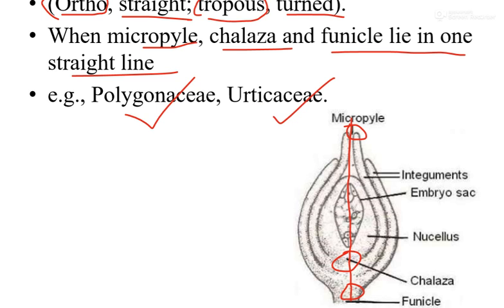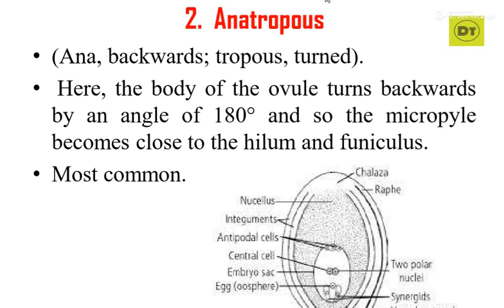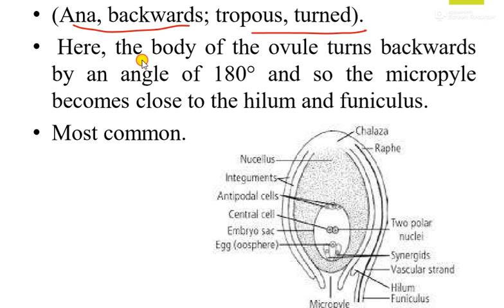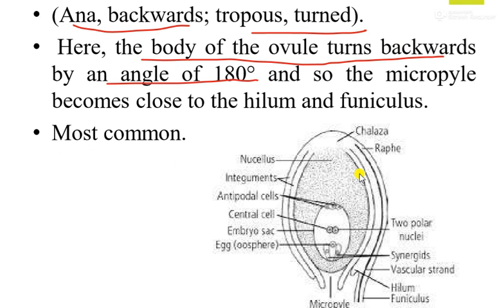Now we will move on to the second type of ovule, which is known as anatropous type. 'Ana' in Greek means backwards and 'tropous' means turned, so it is an inverted kind of ovule. The body of the ovule turns backwards by an angle of 180 degrees compared to the previous orthotropous ovule, forming an inverted type known as anatropous ovule.